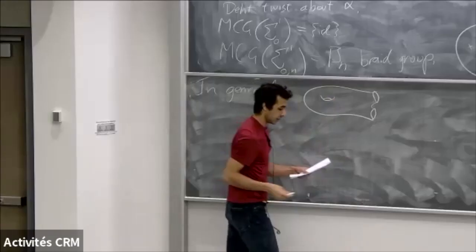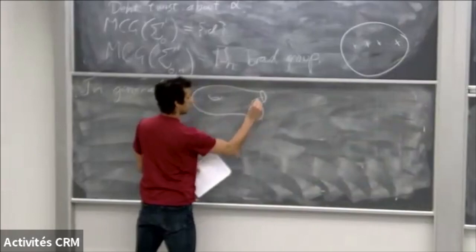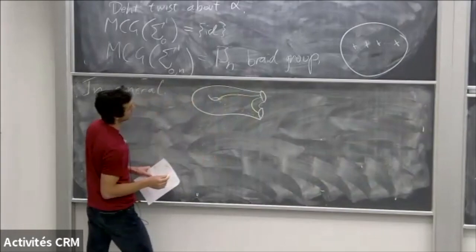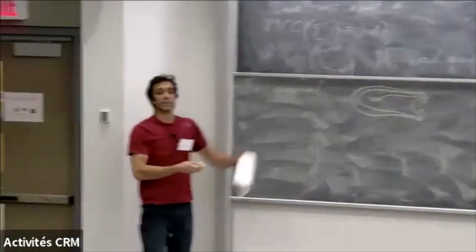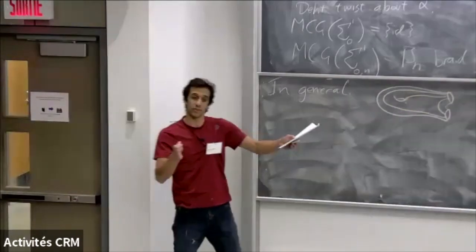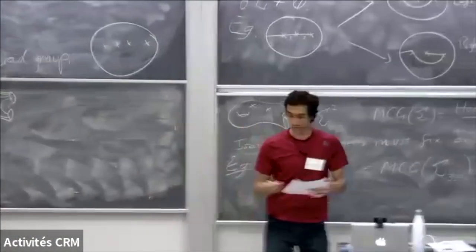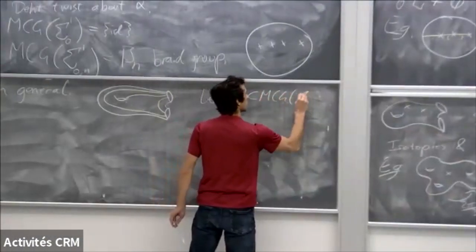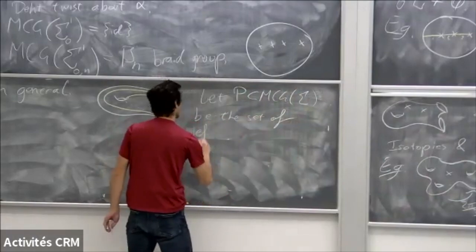In general, if I had a surface, I take a set of arcs which fill the surface — meaning when you cut along them, you're just left with a disk. Then you play the same game: which one goes to the left first? That exactly gives you a positive cone on the mapping class group. So you let P, a subgroup of the mapping class group of sigma, be the set of left-veering mapping classes.